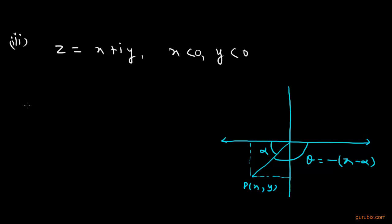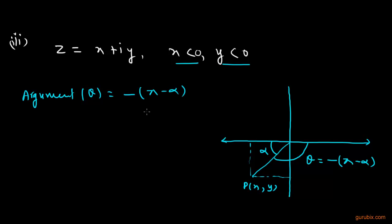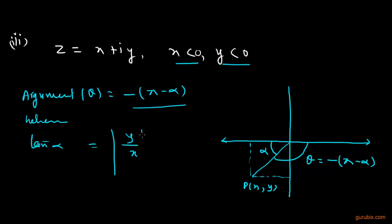So in this condition, when both x and y are negative, the argument θ = −(π + α), where tan α = |y/x|.